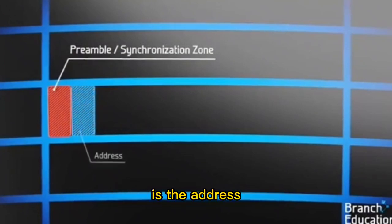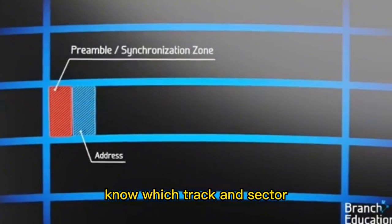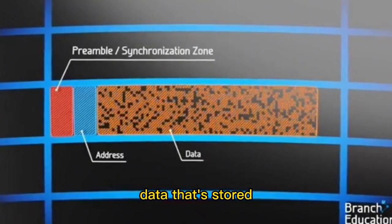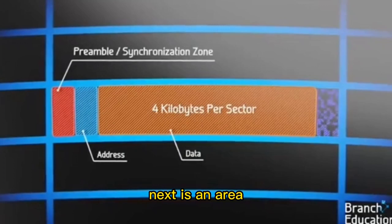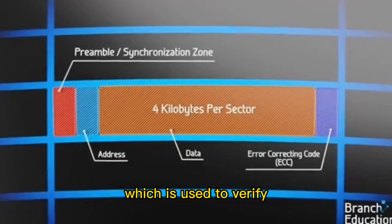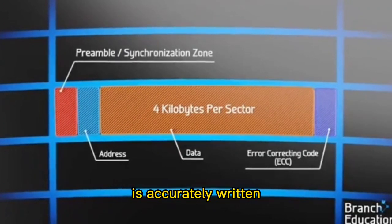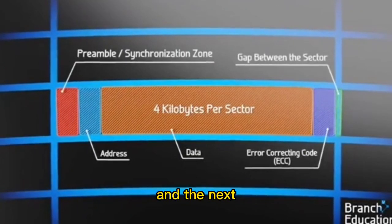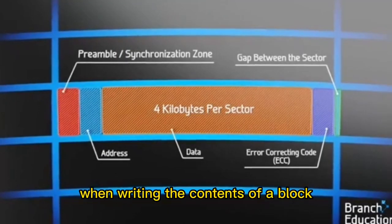The next part of the sector is the address, which helps the read write head know which track and sector it's currently positioned over. After that, we have the actual data that's stored, typically 4 kilobytes of data per sector. Next is an area for an error correcting code, or ECC, which is used to verify that the data stored in the block is accurately written and properly read. And finally, there's a gap between this sector and the next, which allows the read write head some tolerance when writing the contents of a block.